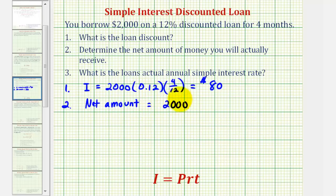Minus the discount of $80, so you actually receive $1,920 for this discounted loan.